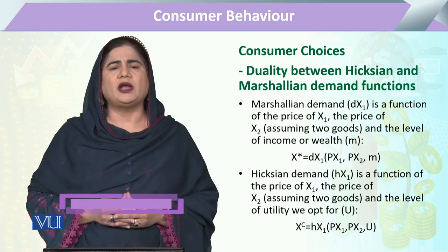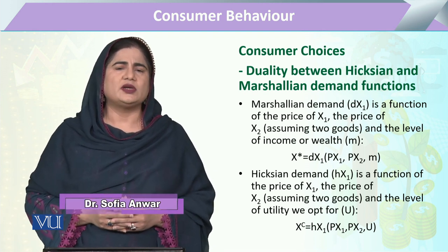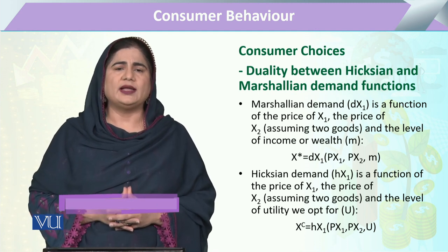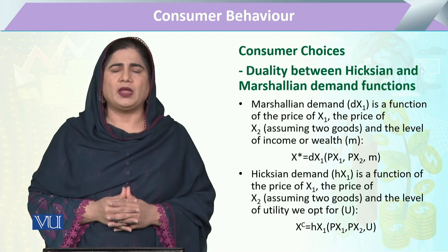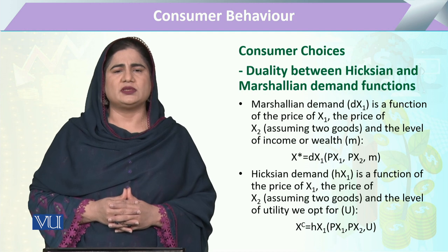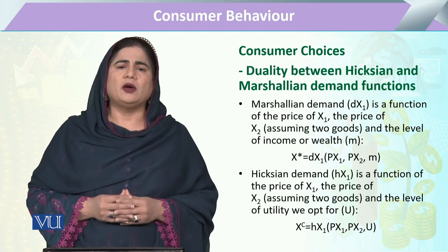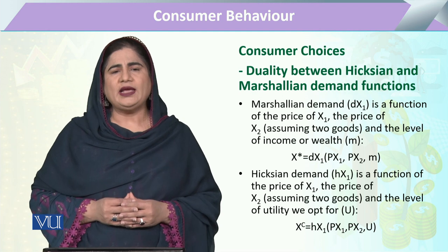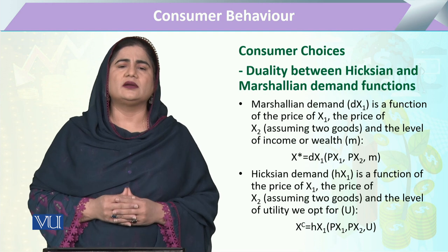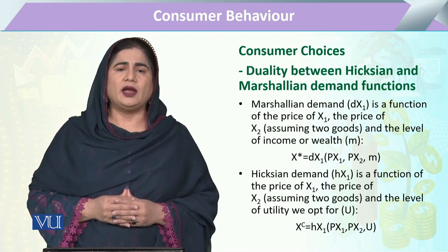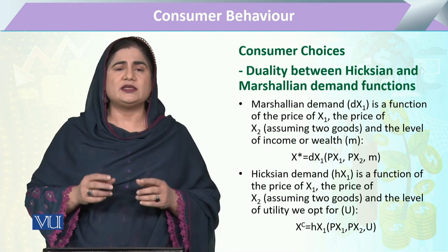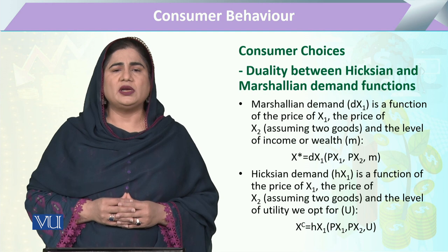In the Marshallian demand function, we utilize two commodities X1 and X2 and we assume that income will remain the same. But in the Hicksian demand function, we again utilize two commodities X1 and X2, and for those bundles of goods, if utility has to be maximized, the assumption is that utility remains the same but income varies — and this income that varies is the nominal income.